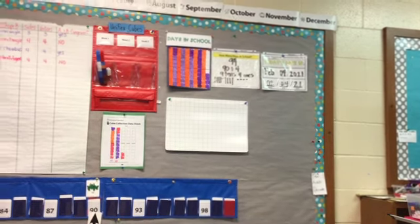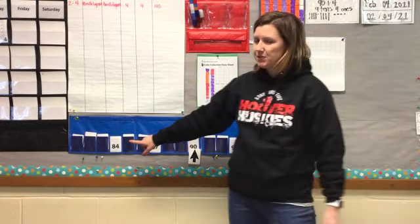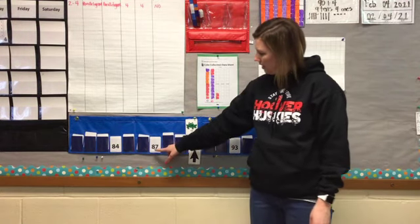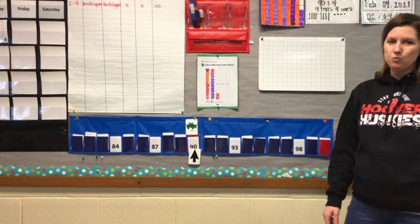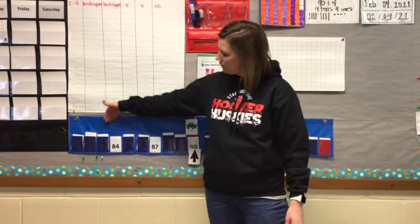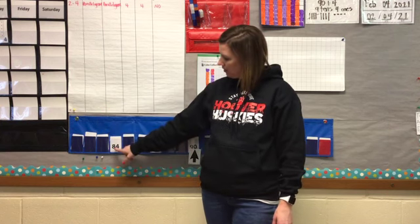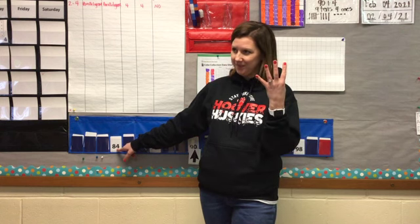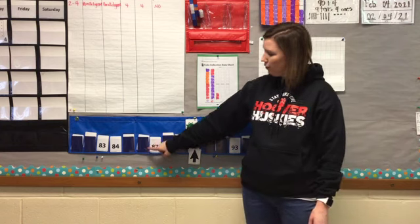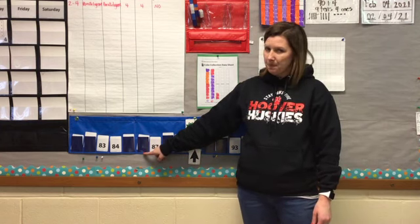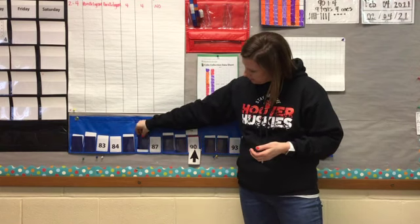We're going to take a look at our number line. I have some of the numbers flipped over: 84, 87, 90, 93, and 98. We're going to fill in just a few more cards. Think about what comes before 84. What would this number before be? Think about what comes before four — three — and the tens don't change. If you said 83, you were right. What comes before 87? Think about what comes before seven — six. The tens don't change, we're only going back one. If you said 86, you were right.